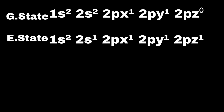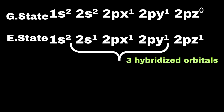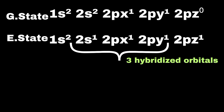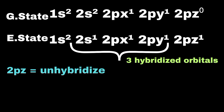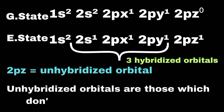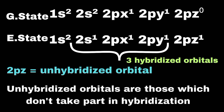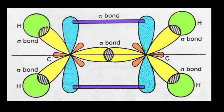Considering the electronic configuration of carbon again, as discussed for methane, an electron from the 2s orbital is promoted to the vacant 2pz orbital. During this process, 1s and 2p orbitals overlap to form three hybridized orbitals. Although one electron is present in the 2pz orbital, it is not involved in the intermixing and is called an unhybridized orbital. Unhybridized orbitals do not take part in hybridization and are instead involved in the formation of pi bonds. The geometry of ethene is trigonal planar and the bond angle is 120 degrees.